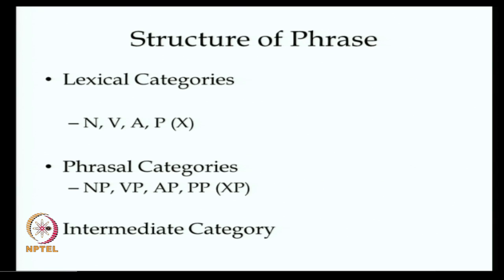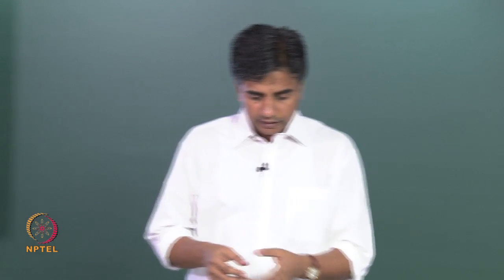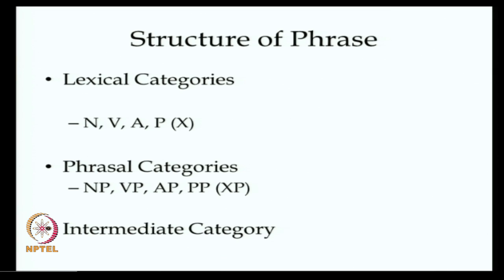There are four different lexical categories — the prominent ones: nouns, verbs, adjectives, and prepositions. When we develop the structure of these categories, we look at them in terms of their phrases: noun phrases, verb phrases, adverbial phrases, adjectival phrases, and prepositional phrases. There are also some intermediate categories, and I am going to show you how to draw those up and understand their internal structure.